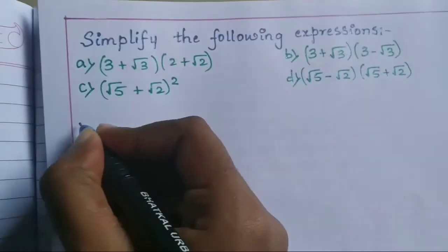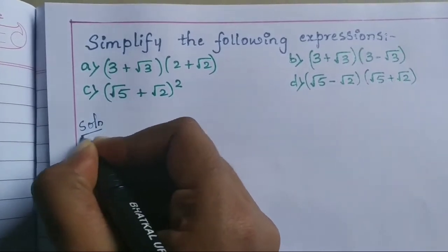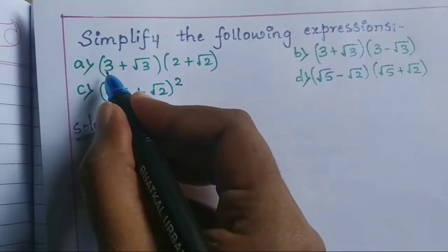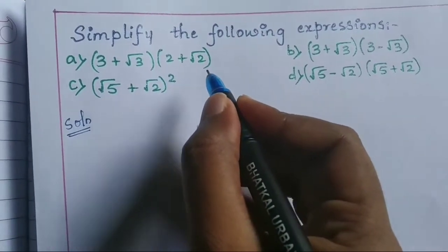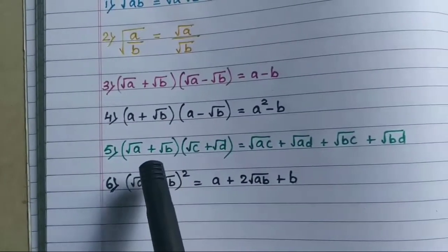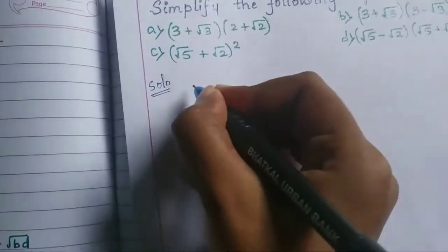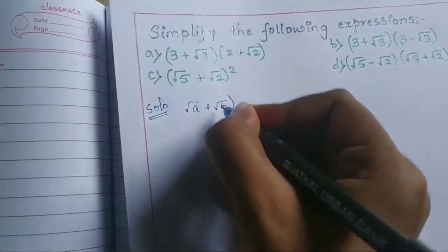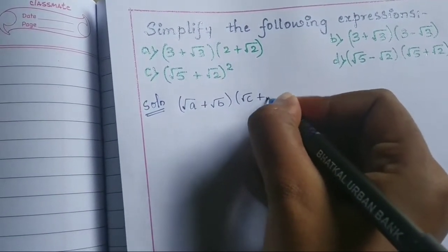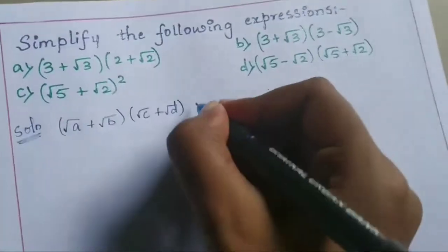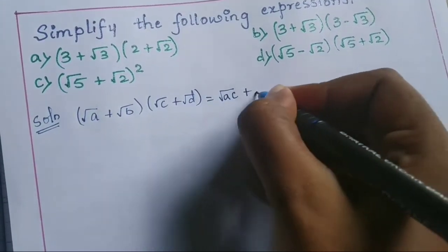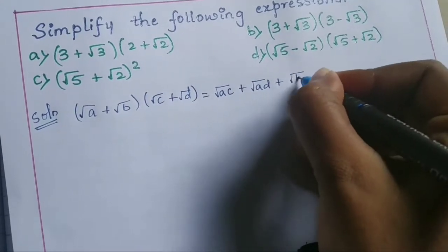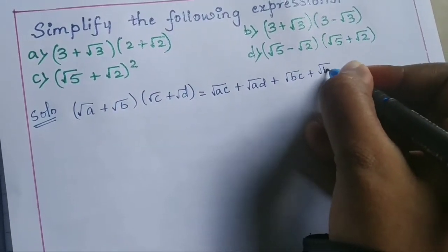Let's solve the first one: (3 + √3)(2 + √2). We have two different numbers, so we apply identity five: root A plus root B, times root C plus root D, equals root AC plus root AD plus root BC plus root BD.